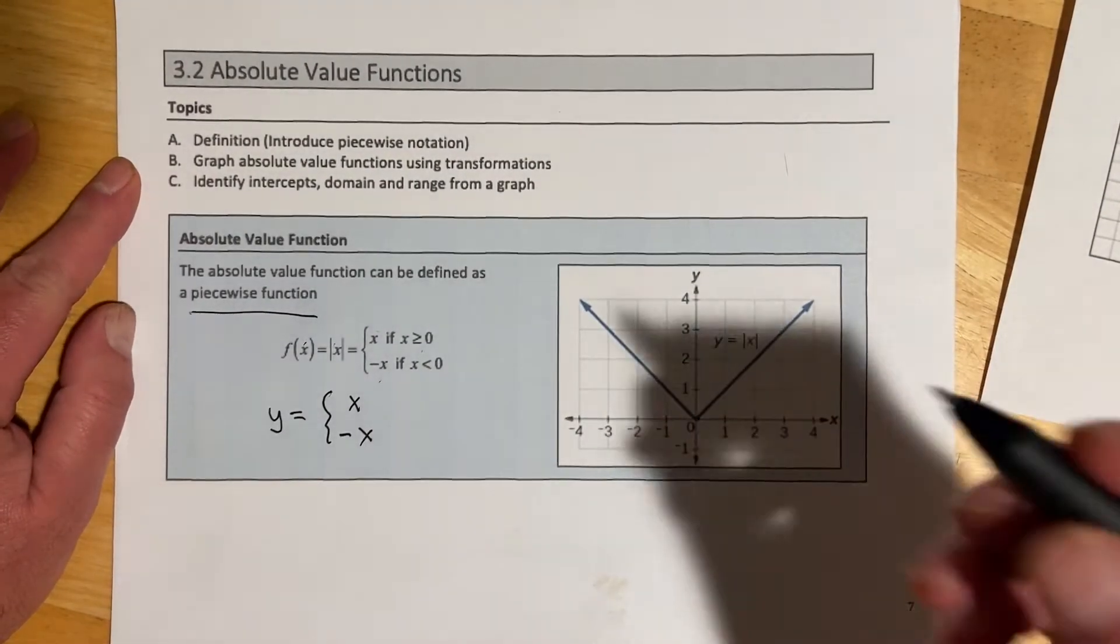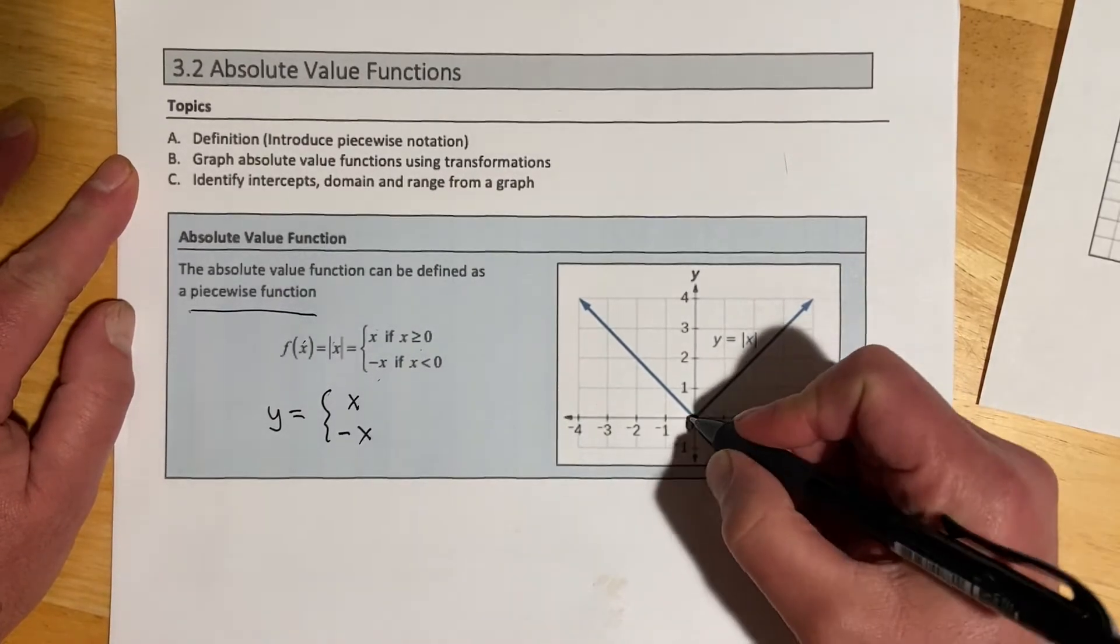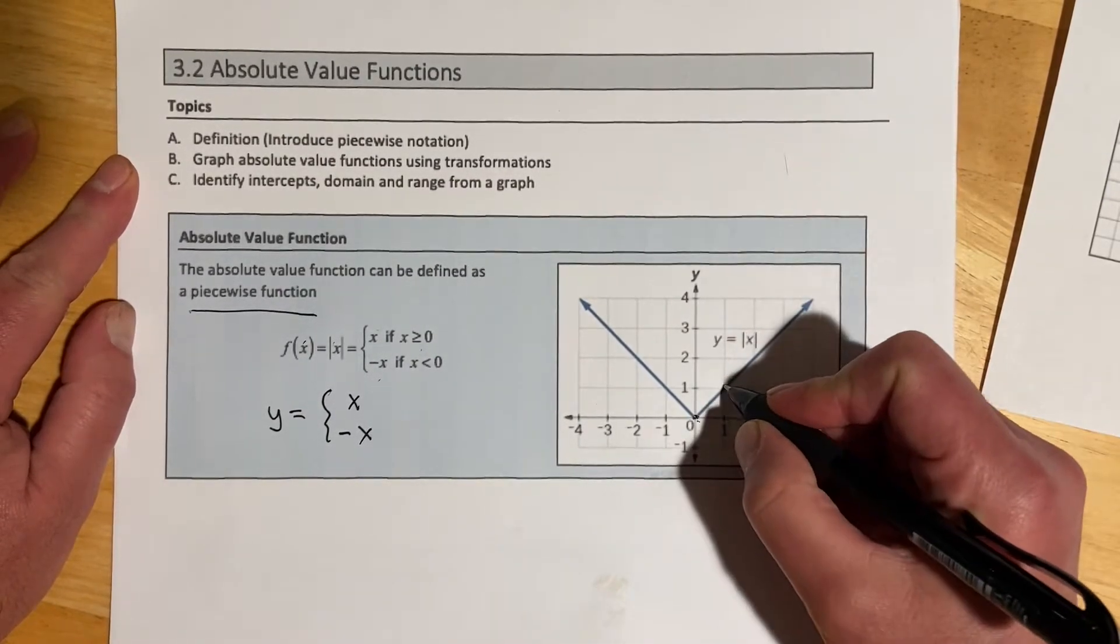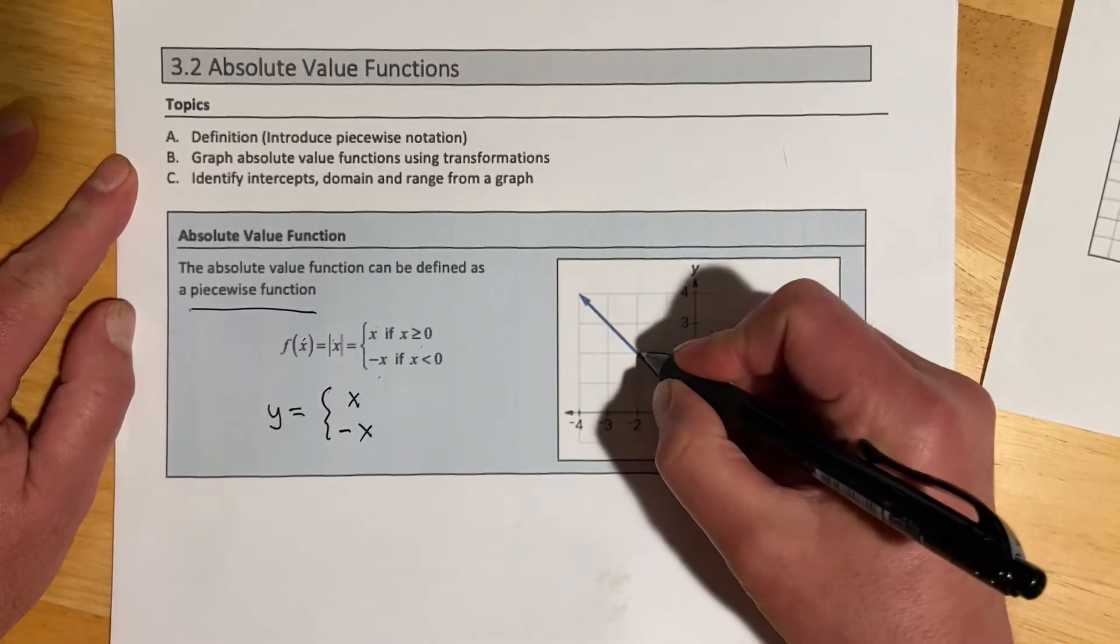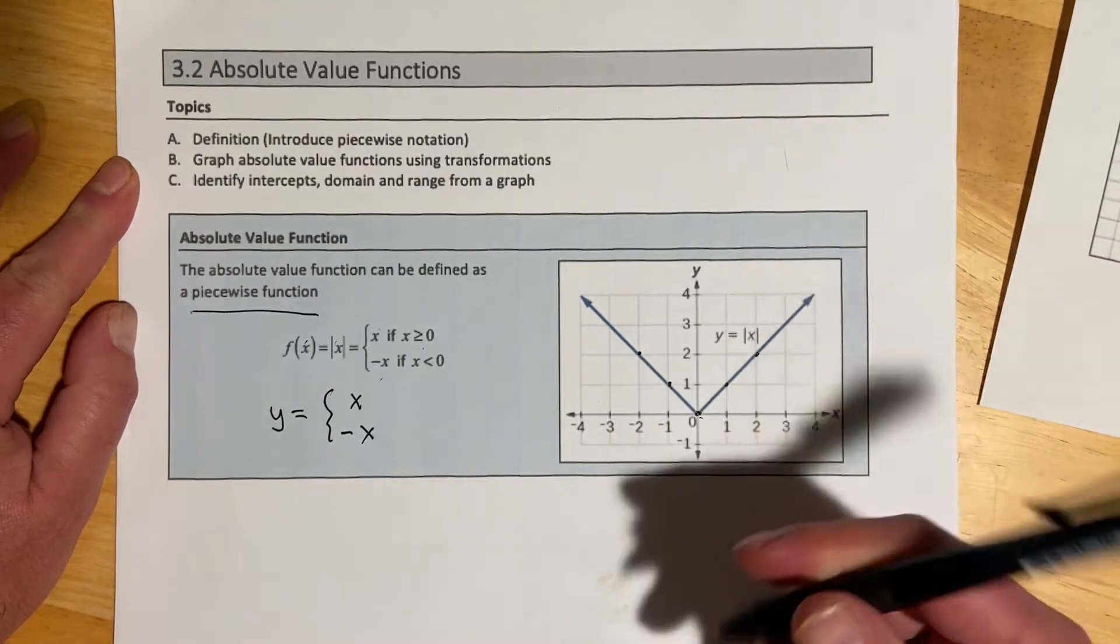Notice our graph will have its vertex at the origin (0, 0). Its slope is over 1, up 1, over 1, up 1, and it does that on both sides. It's symmetrical about the y-axis. It's an even function.